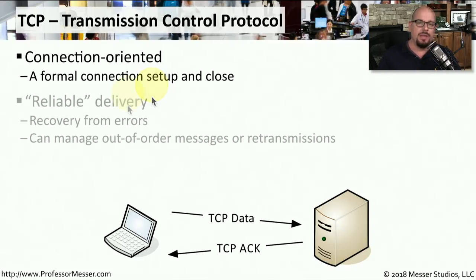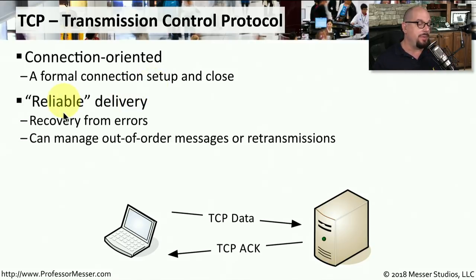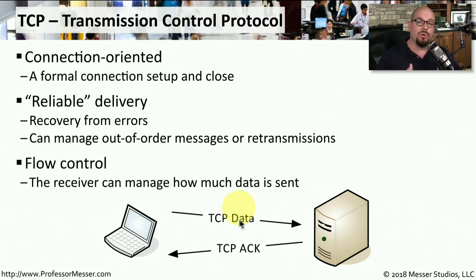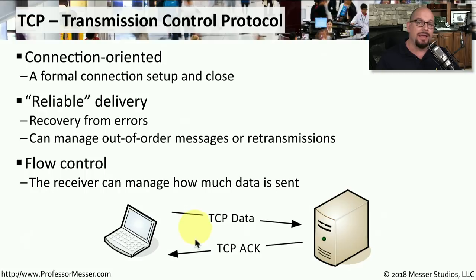TCP is also called a reliable form of delivery. If any errors occur during communication, there's a process for retransmitting that data to ensure everything gets through without problems. TCP achieves this through acknowledgments: when station A sends data to station B, station B responds confirming it received the data. If station A does not receive an acknowledgment, it assumes the data didn't get through and resends it.